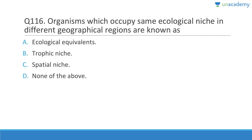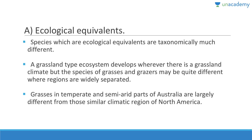Organisms which occupy the same ecological niche in different geographical regions are called ecological equivalents. Species which are ecological equivalents are taxonomically very different. A grassland-type ecosystem develops where there is a grassland climate, but the species of grasses and grazers may be quite different where regions are widely separated — for example, grasses in temperate Australia versus North America.